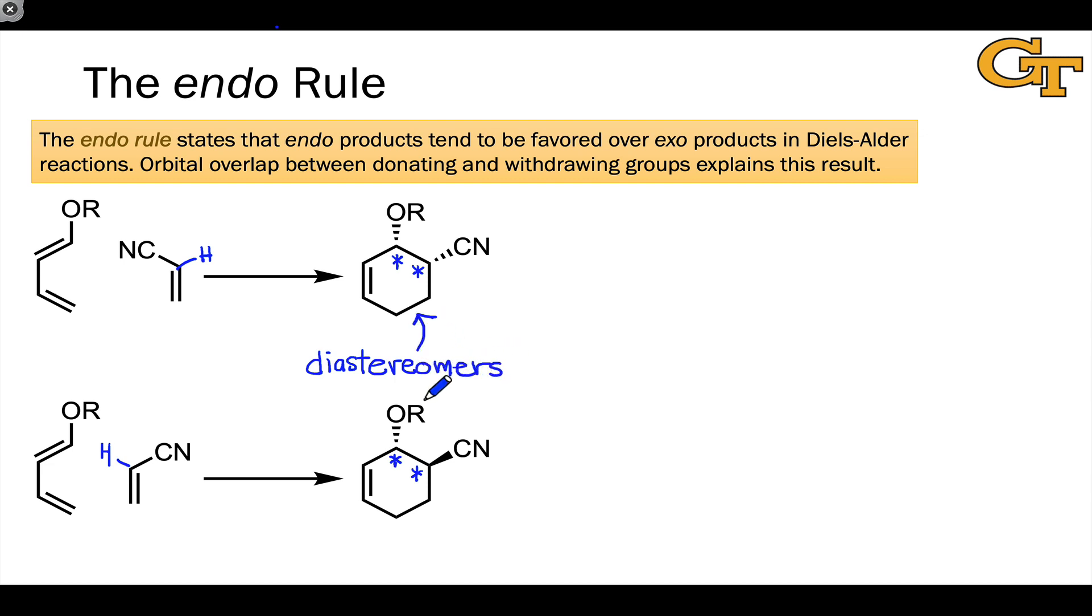They're not mirror images, but they are stereoisomers in the sense of having identical connectivity. Because they're diastereomers and have different energies, and the transition states leading to them would be diastereomeric and have different energies, we should expect one to be favored over the other. The question then is which transition state is lower in energy. The transition state in which the cyano group is in an endo orientation, or the transition state in which the cyano group is in an exo orientation.